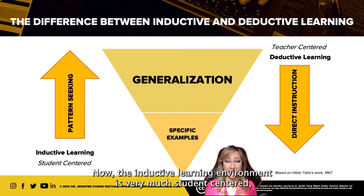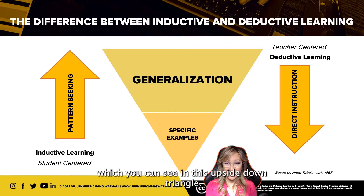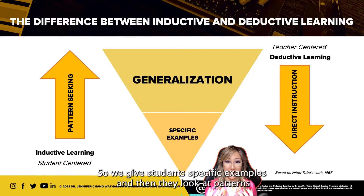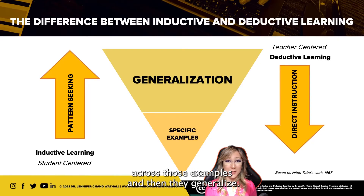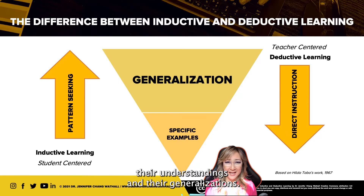The inductive learning environment is very much student-centered. We start off with specific examples, which you can see in this upside-down triangle. We give students specific examples and then they look at patterns across those examples and then they generalize. We allow our students to actually articulate and communicate their understandings and their generalizations.